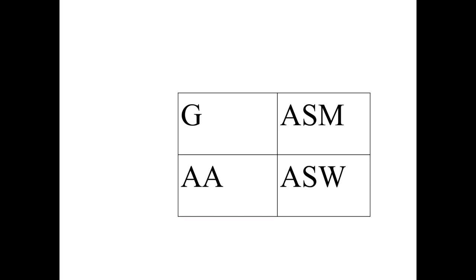You have to roll equal to or less than the value, and sometimes there are modifiers that reduce or increase the value further. If you succeed, you inflict an effect on the target. Depending on the target, it could be to destroy it, flip it to its weaker step-loss side, push it back, or destroy a target on the ground such as nuclear facilities depicted on the map.